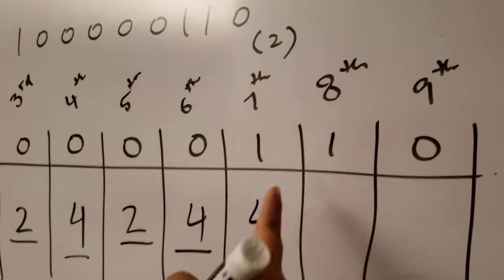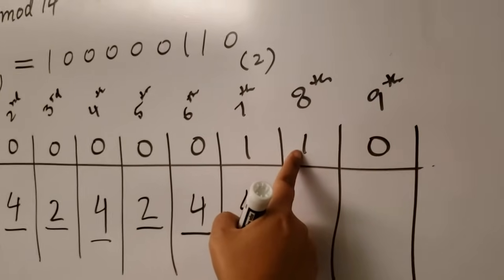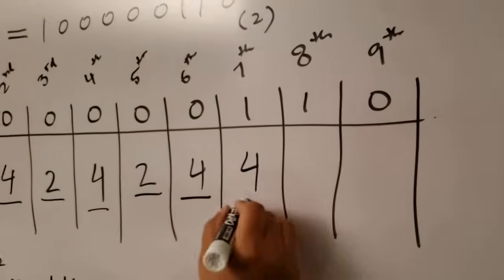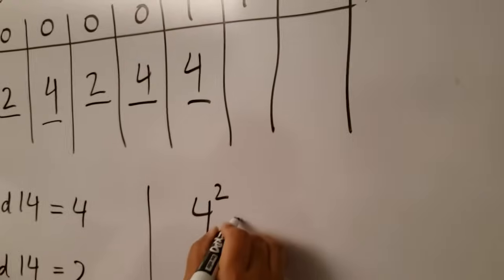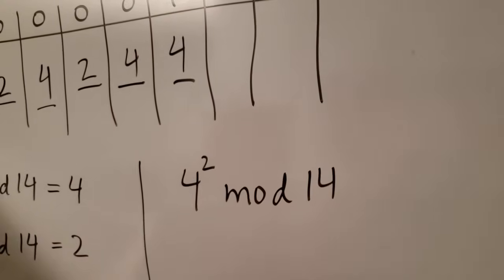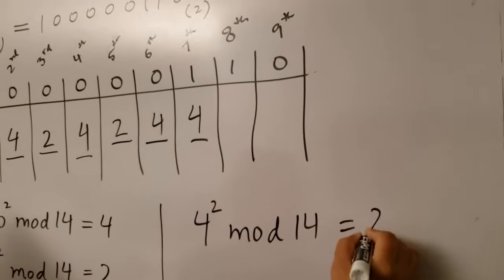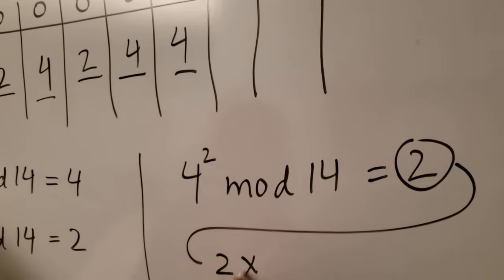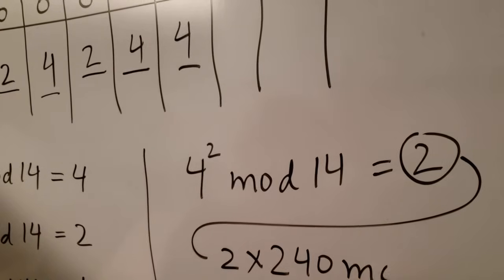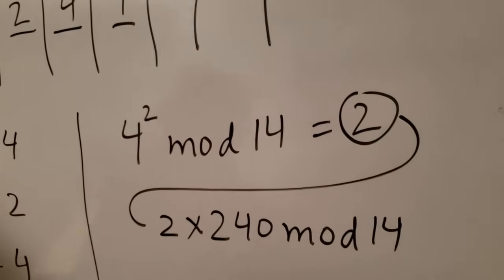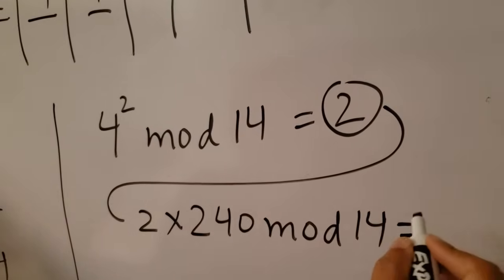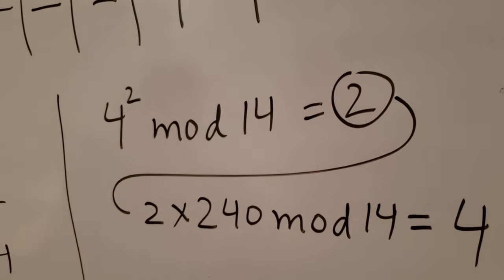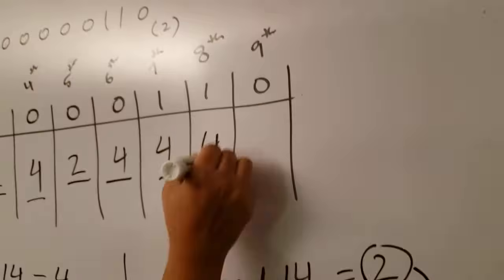Now look at the binary digit of the eighth column, which is again one, so we do the two-step process. Take four, square it, mod 14, which equals two. The second step: take this two, multiply it by the base 240, mod 14 — you get four. Write down four in the eighth column.